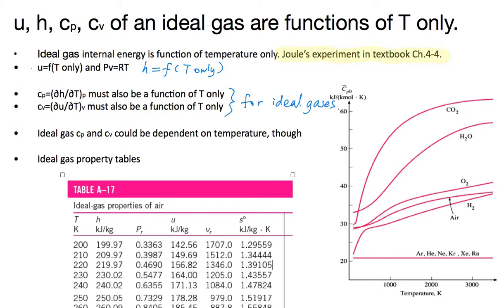The last thing I want to introduce in this brief lecture is the ideal gas property table. You can find ideal gas property tables for various substances under conditions where they can be considered ideal gases. For example, here is table A-17 from the Cengel textbook. This is the ideal gas property table for air, and you can see that the table is indexed against the temperature of the system.